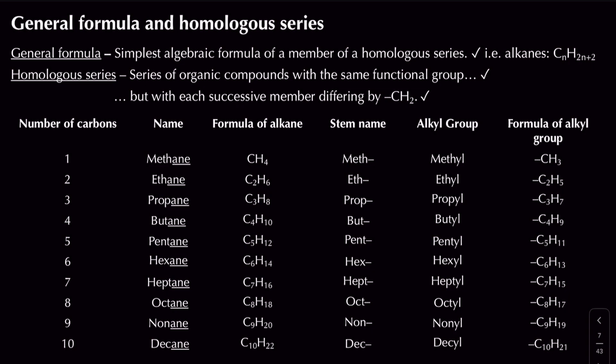You can use the general formula to find out how many hydrogen atoms you have for a given number of carbon atoms. For example, for C15 (15 carbon atoms), the hydrogen count is 2×15 + 2 = 32, giving C15H32 — which is called pentadecane. Another general formula you've seen before is for alkenes: CnH2n. We'll come across these when we deal with them in their relevant topics.